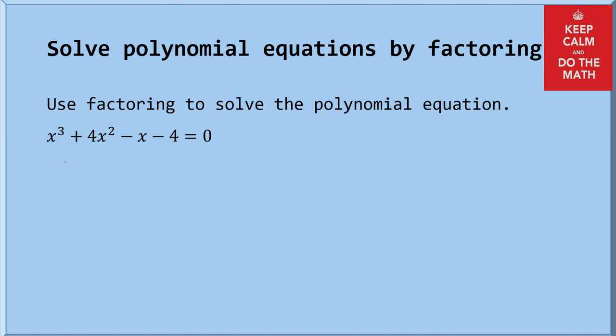In this video, we're going to work on solving polynomial equations by the use of factoring. So here's our first example. We're going to use factoring to solve this polynomial equation of x cubed plus 4x squared minus x minus 4 equals 0.